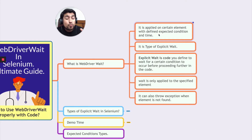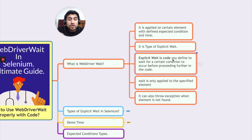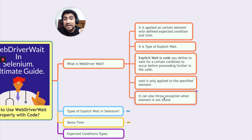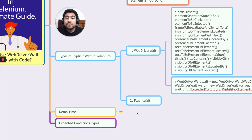Explicit wait is code you define to wait for a particular element or condition before proceeding further. If you don't know what waits are in Selenium, I recommend you watch my previous video on that. If the driver is not able to find the element within the given time frame, it will throw an exception.